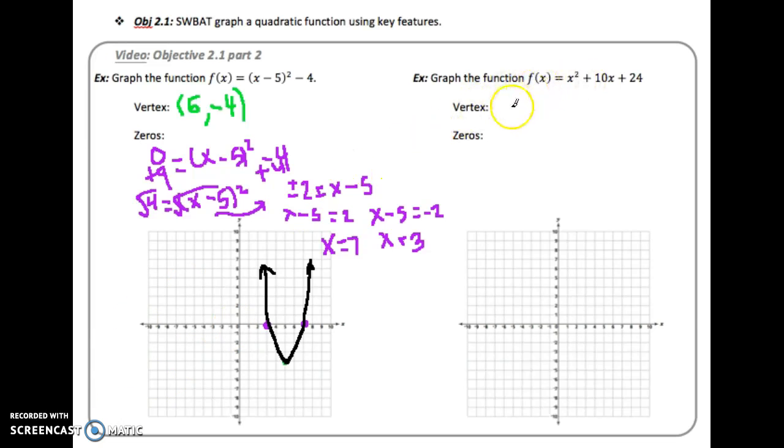So the next one has us find the vertex but this is in standard form. So remember when we want to find the x-coordinate of the vertex in standard form we do negative whatever b is over 2 times whatever a is. So b in this case is 10 so we're going to put 10 in there and then a in this case is 1 we're going to put 1 in there. So I'm going to get -10/2 which is -5.